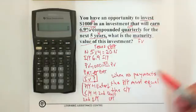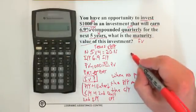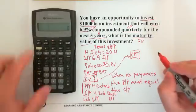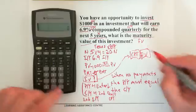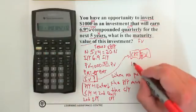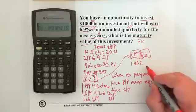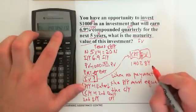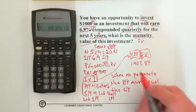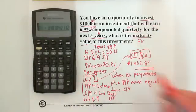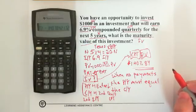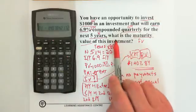Now to find FV: press the CPT button, then press FV. Rounding to two decimal places, the third decimal is 2 so we don't round up. Our final answer is $1,407.84 — that's the maturity value of the investment.